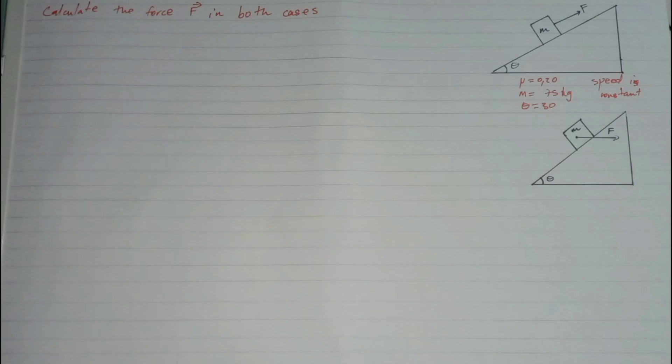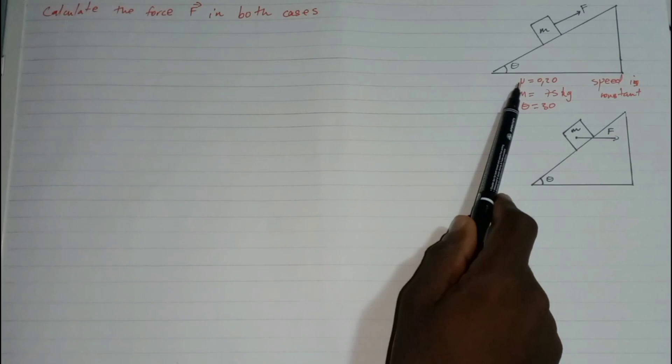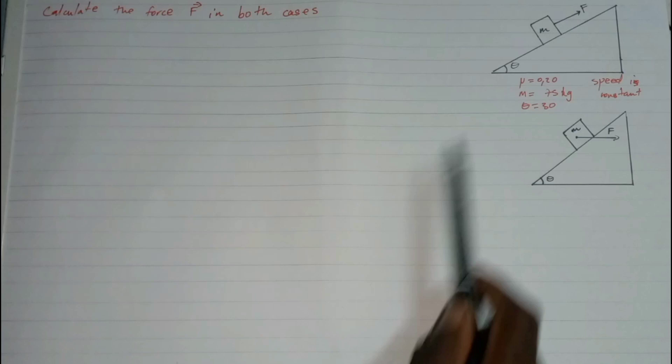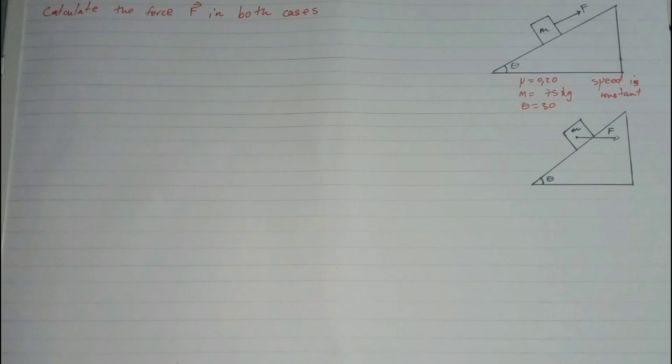Given that the speed is constant, that means acceleration is equal to zero. I'm given the coefficient of friction, which is μ, and I'm given the mass and the angle which is theta.